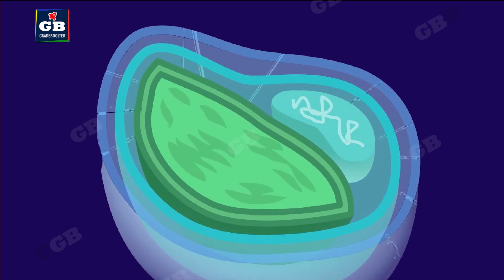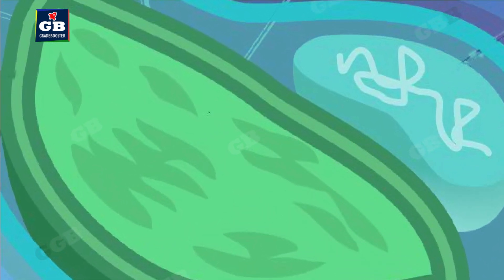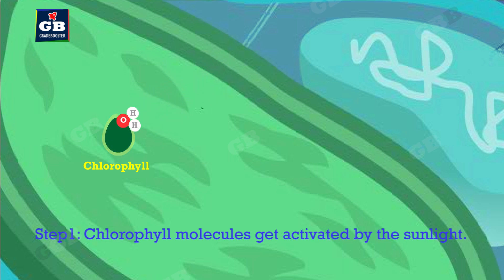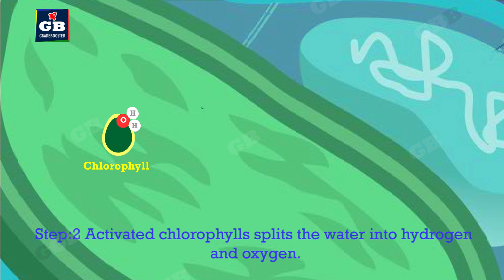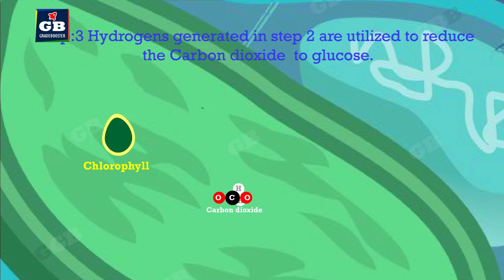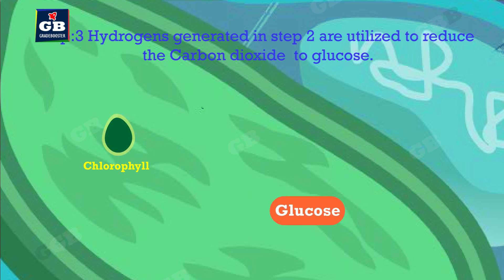Let us see the steps involved in photosynthesis. Step 1: Chlorophyll molecules get activated by sunlight. Step 2: Activated chlorophyll splits water into hydrogen and oxygen. Step 3: The hydrogen generated in step 2 is utilized to reduce carbon dioxide to glucose.